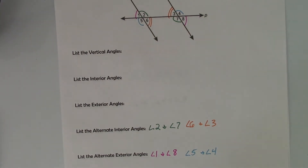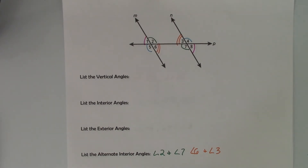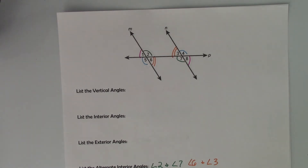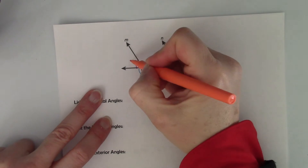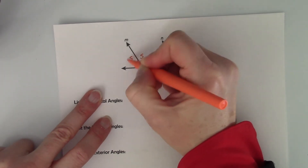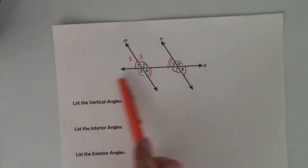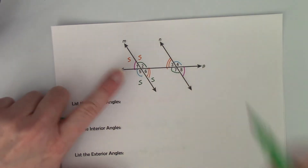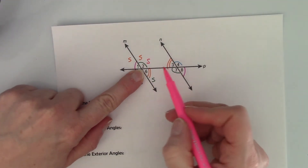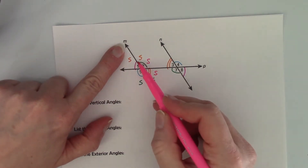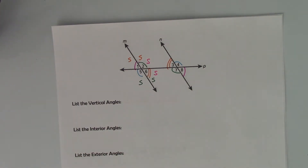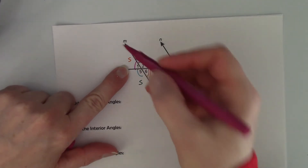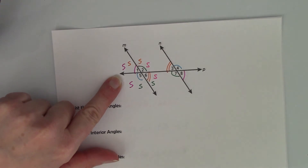Now, from the back side of the sheet — supplementary angles. Supplementary angles are angles that add up to 180 degrees, so those angles together form a line. Angle 1 and angle 2 would be supplementary angles — they form line P. Also, angle 5 and angle 6 form line P. But also, angle 2 and angle 6 form a line — they form line M. And angle 1 and angle 5 also form line M, so they are supplementary angles.